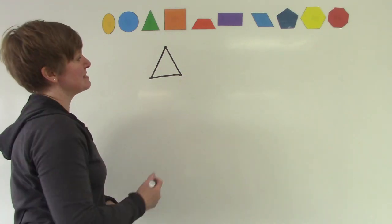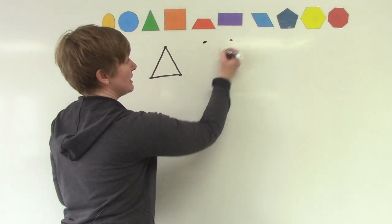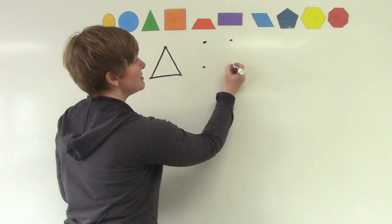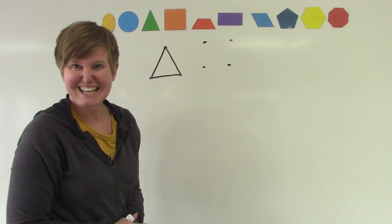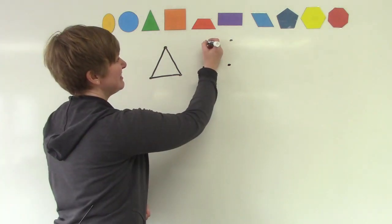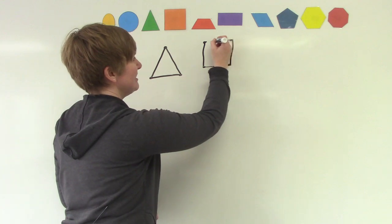Now we're going to practice making a four-sided shape. So what I would like for you to do is draw four dots on your paper. And then we're going to connect the dots. One, two, three, four.